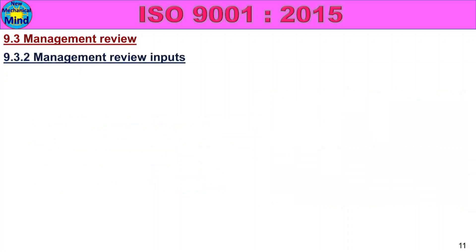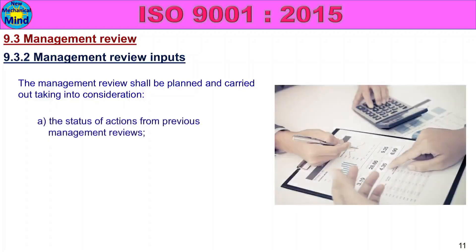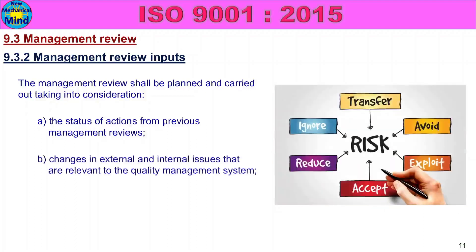Next, 9.3.2 Management Review Inputs. The management review shall be planned and carried out, taking into consideration the quality management system review. The status of the actions from previous management reviews — in the previous management reviews, the actions will be verified. Changes in external and internal issues that are relevant to the quality management system.